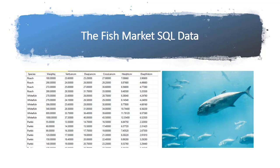Here is the data in that same SQL table. Notice this is our species, and we have species such as roach, whitefish, parkey. This is the weight in grams, so this one might be 290 grams. This is vertical length in centimeters, diagonal length in centimeters, cross length in centimeters, height in centimeters, and diagonal width in centimeters.